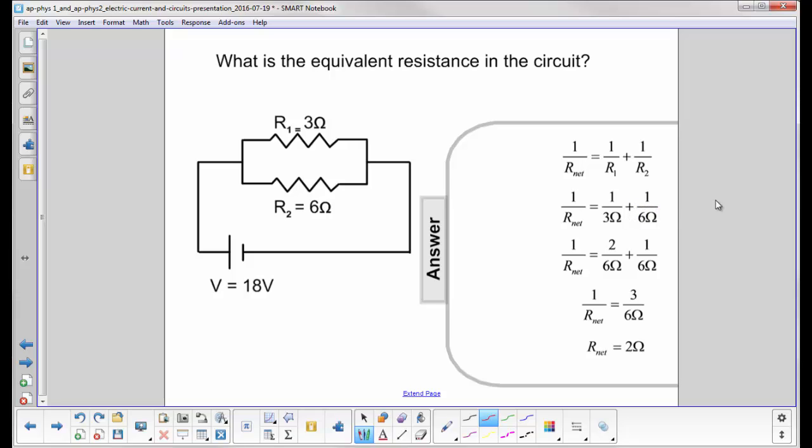Substitute in the values, and don't even use a calculator here. Go back to your old arithmetic. 1 third is 2 sixths ohms. Here I have 1 sixth ohm. You add the two of them together, and then this will be 1 half ohm.